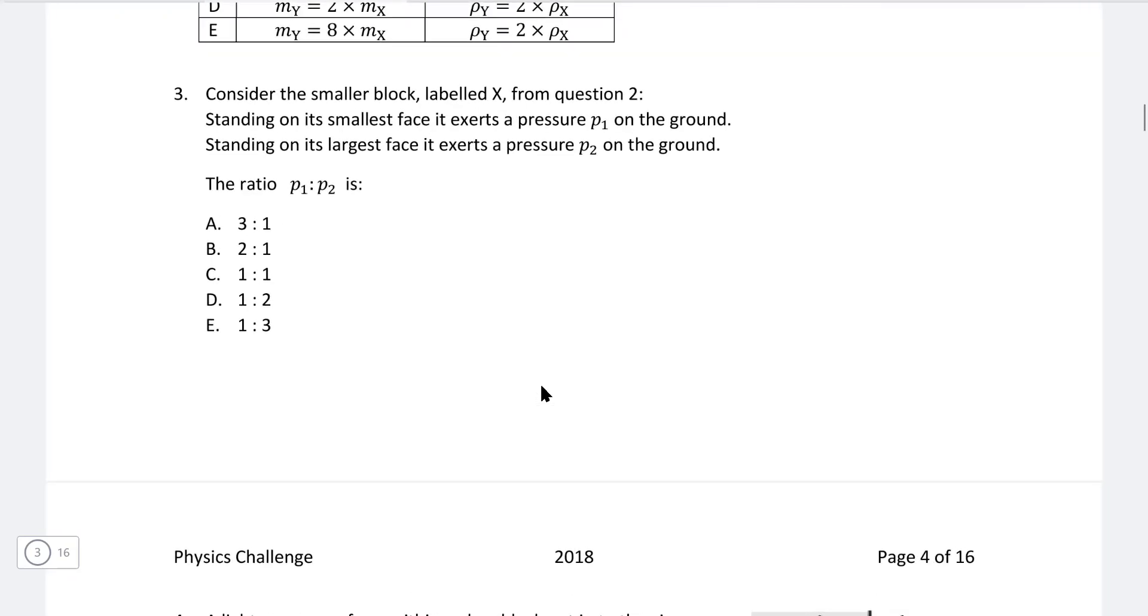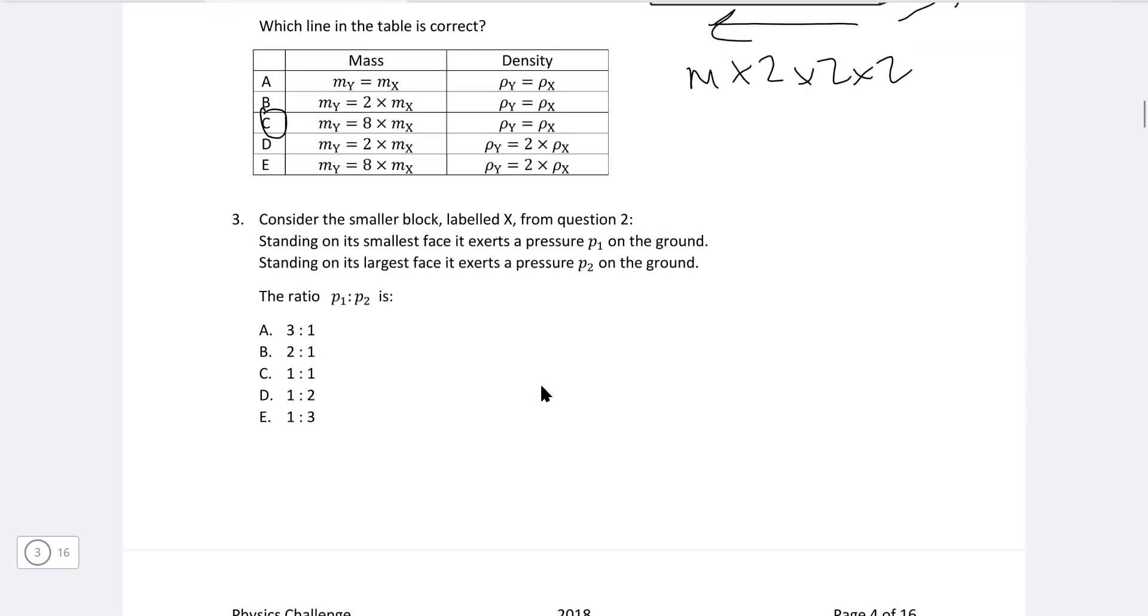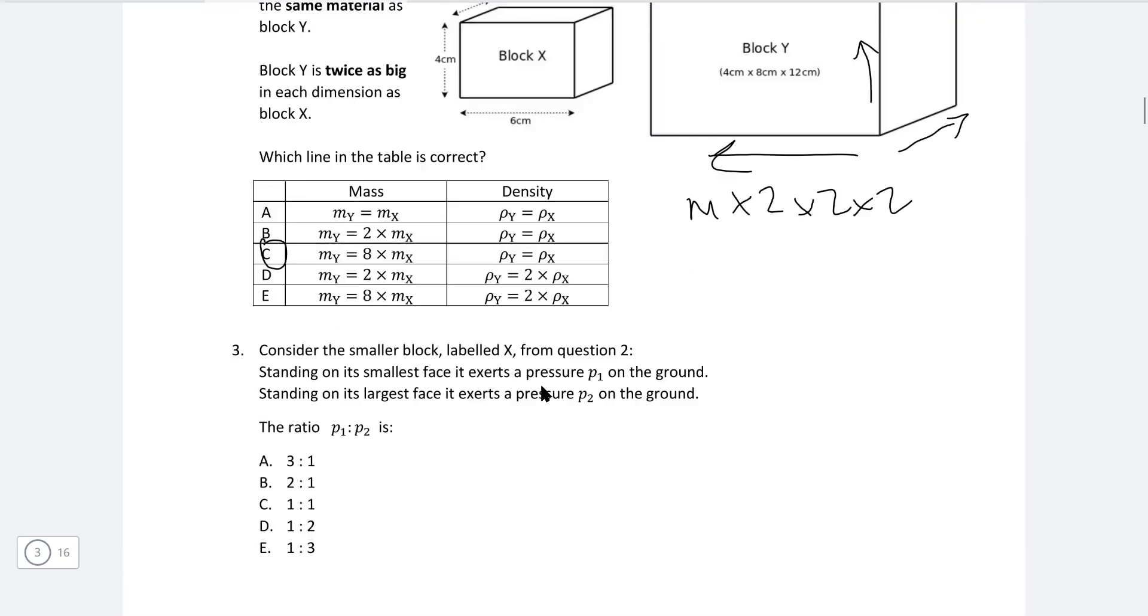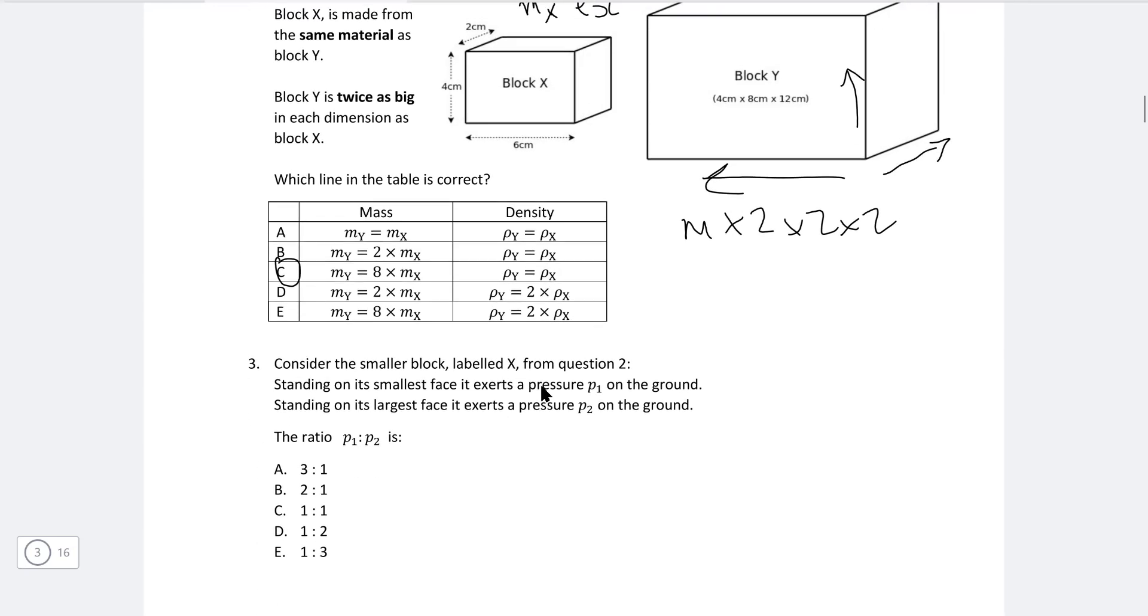Question three. Consider the smaller block labeled X from question two. So just this one across here. Standing on its smallest face, it exerts a pressure P1 on the ground. Standing on its largest face, it exerts a pressure P2 on the ground. What is the ratio of P1 to P2?